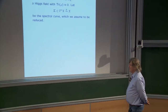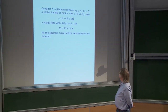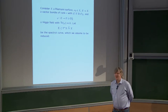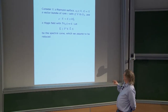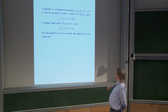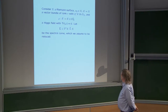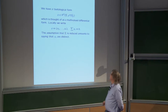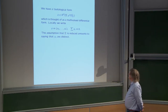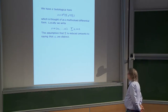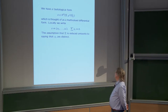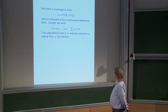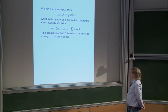Let's take a Riemann surface X, a vector bundle with determinant one, and take a Higgs field — an endomorphism-valued one-form. Let Sigma be the spectral curve, and we'll be assuming that's reduced. We have a tautological form, which we think of as a multi-valued differential form on X. Locally phi is phi_1 up to phi_r, and the trace-zero condition for the Higgs field says the sum of these equals zero.